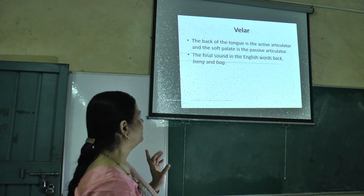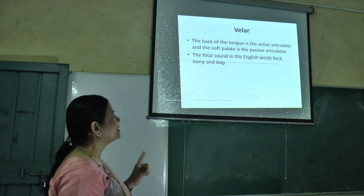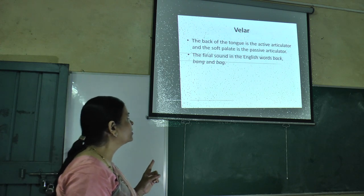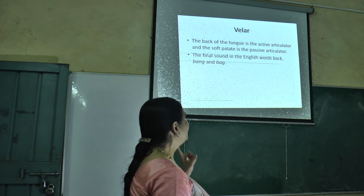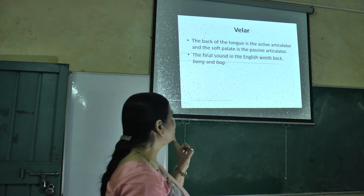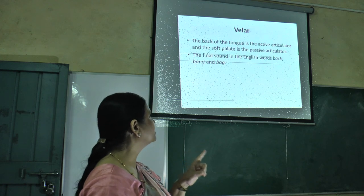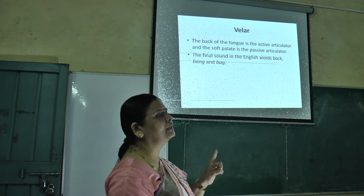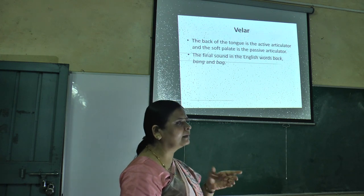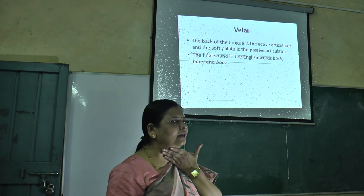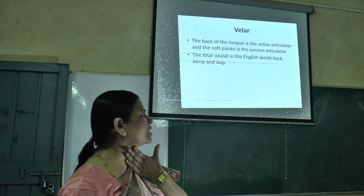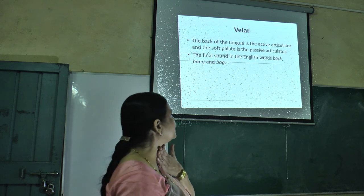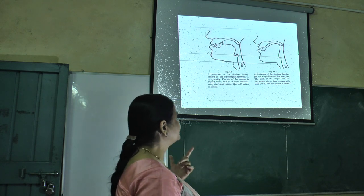Velar. The back of the tongue is the active articulator and the soft palate is the passive articulator. Whenever you pronounce the sounds /g/, /k/, and /ŋ/, you can feel a vibration at the back of the mouth when you touch your fingers there.